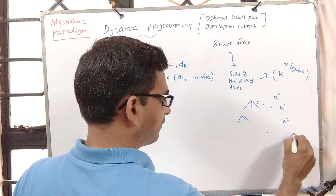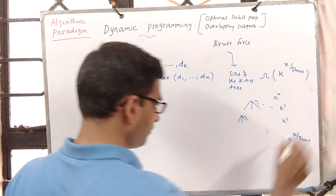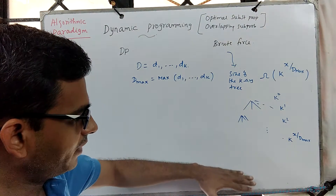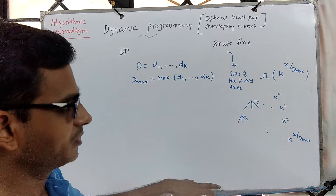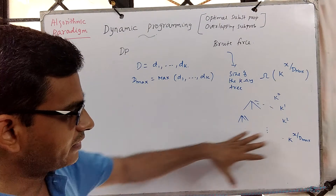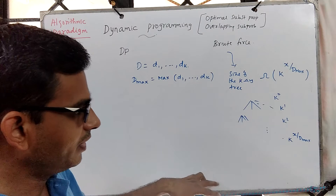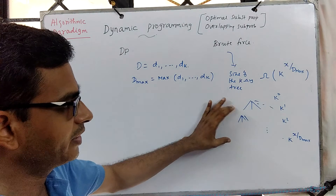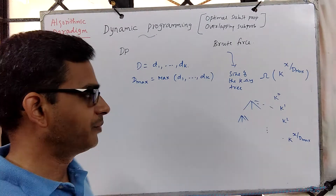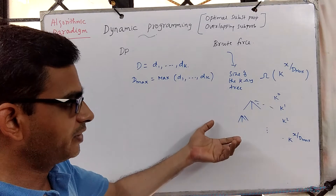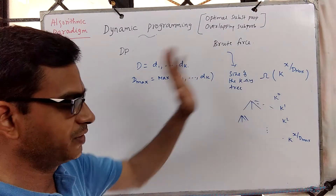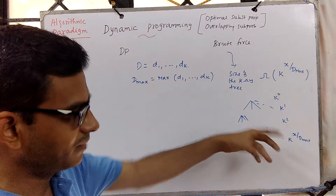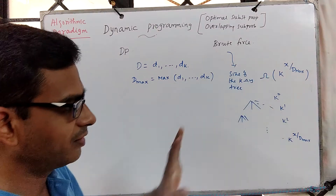At level x/D_max there will be k^(x/D_max) nodes, and then zeros appear, continuing up to level x minus 1. The zeros are scattered between this level and level x minus 1. This alone tells us there are an exponential number of nodes and computations, giving us a lower bound on the brute force algorithm's time complexity. You can sum k^0 plus k^1 up to that level and simplify, but this acts as a good lower bound.